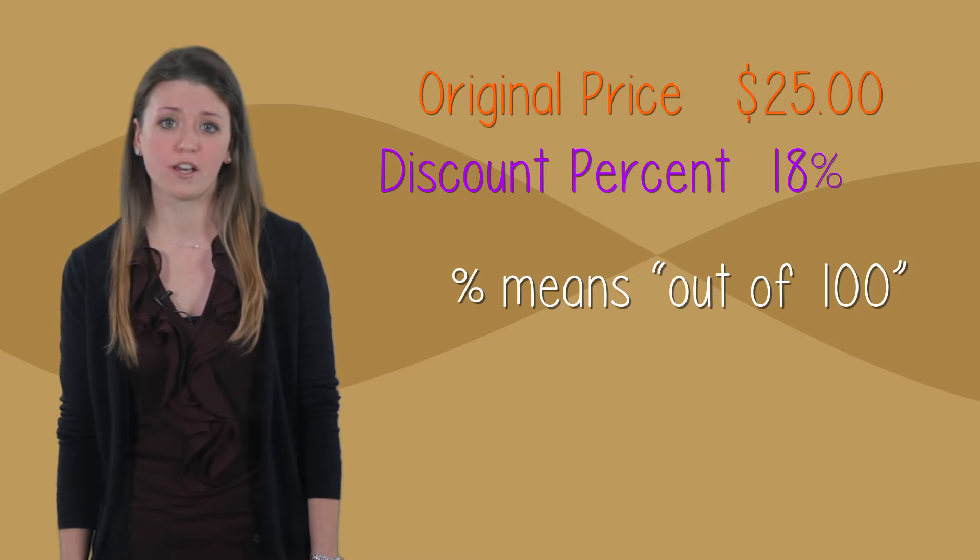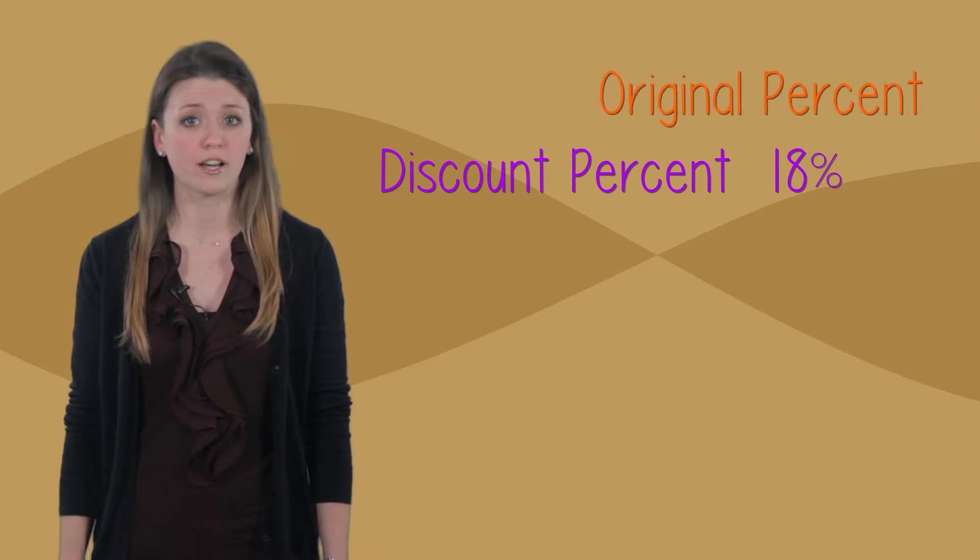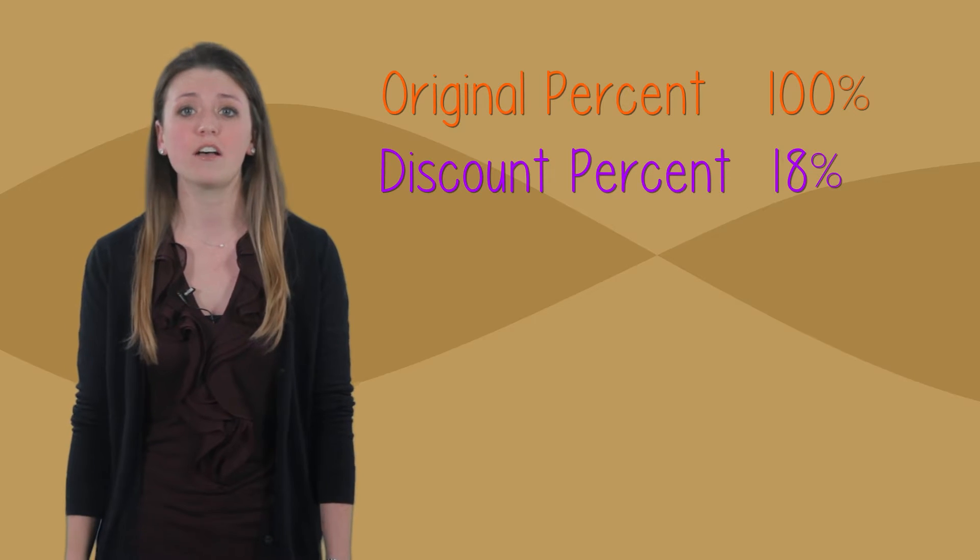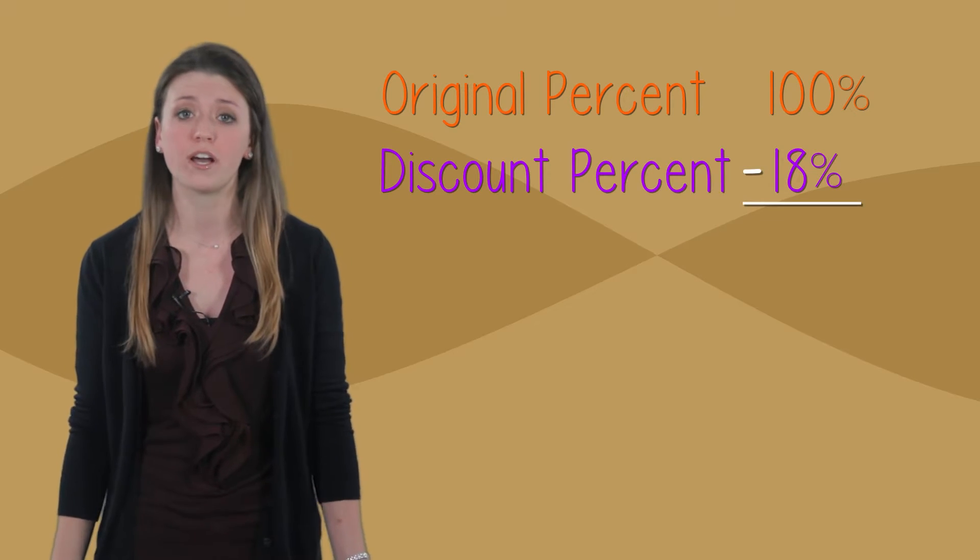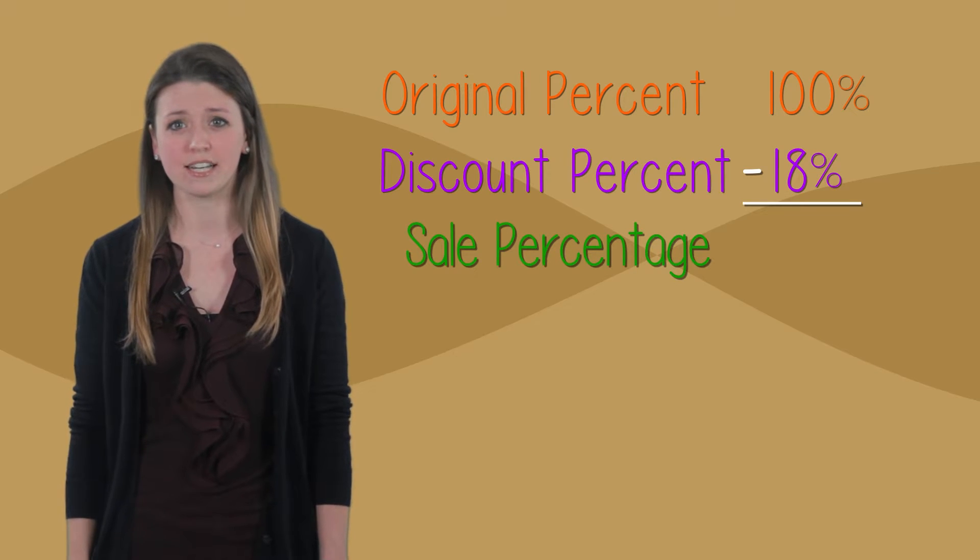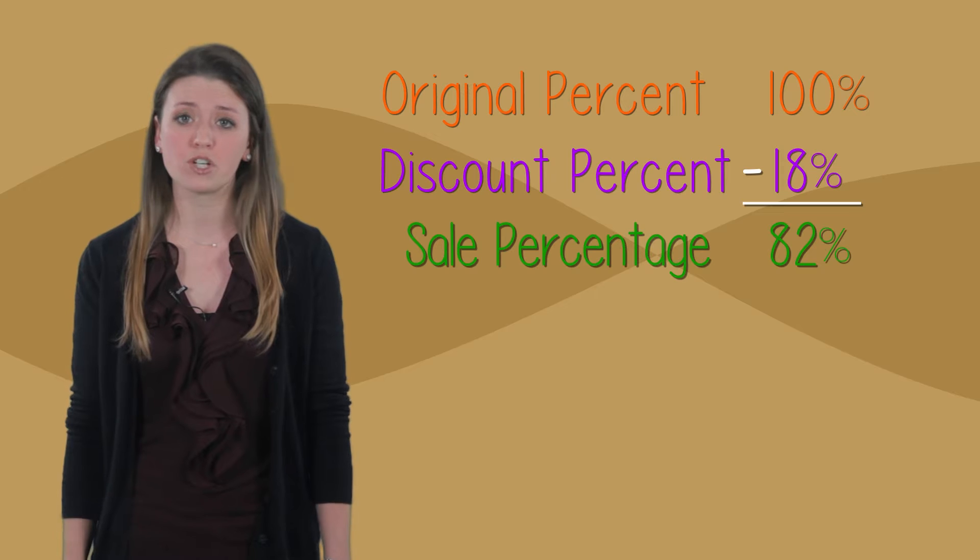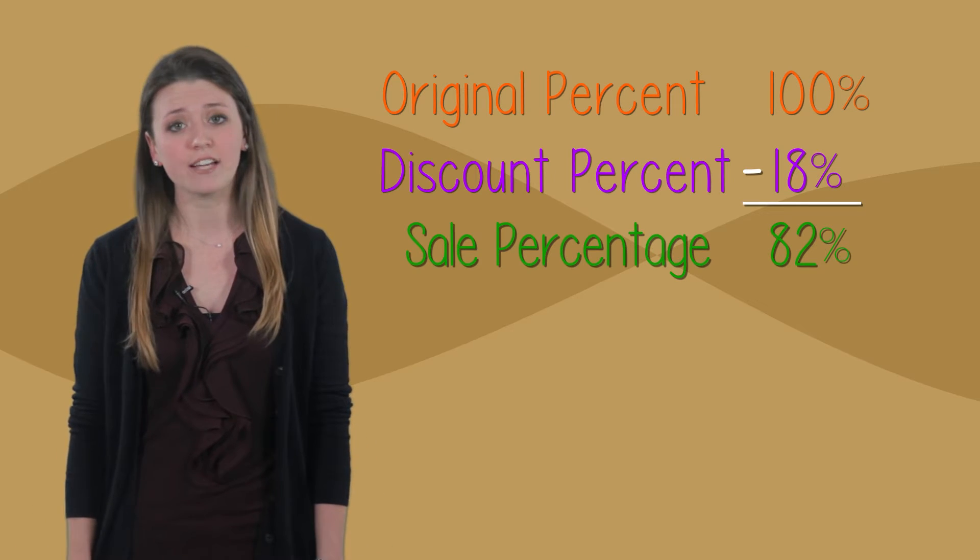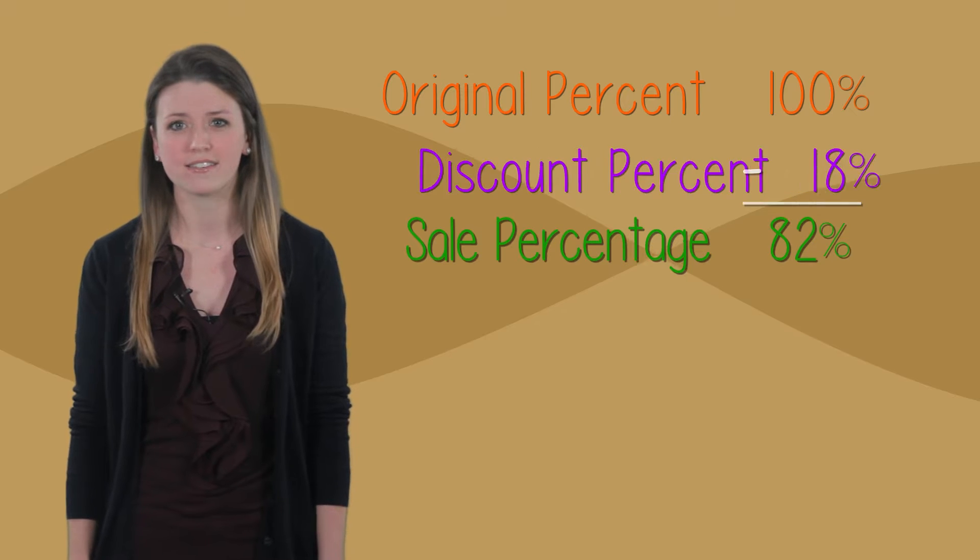Percent means out of 100, so if the total price is 100% and I'm getting a discount of 18%, then I'll subtract 18 from 100 to find the sale percentage. 100 minus 18 equals 82, so the original price minus the discount tells me that I'm paying 82% of the total price. That's easy.